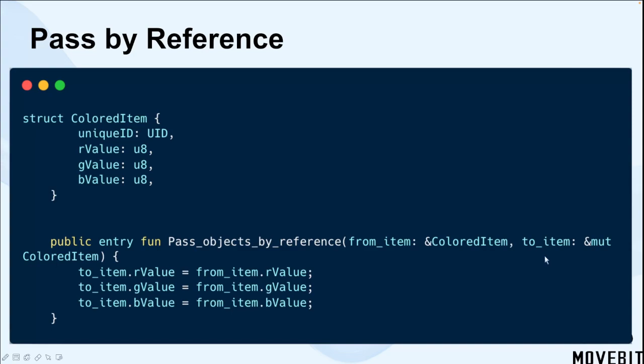Inside the function, the color component values, R value, G value, B value, of the from item are copied into the corresponding color component values of the to item. This effectively copies the color properties from one color item object to another.